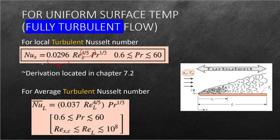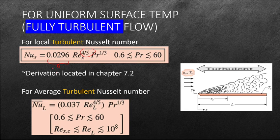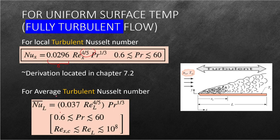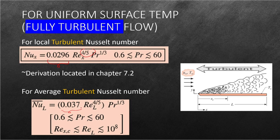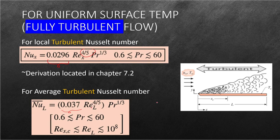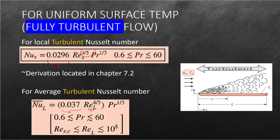So this is for the local Nusselt number. And again, for the average turbulent Nusselt number, we get this formula. So we will be using 0.037 as our C, and we will still be using our Reynolds number at the maximum point of the flat plate along this point.